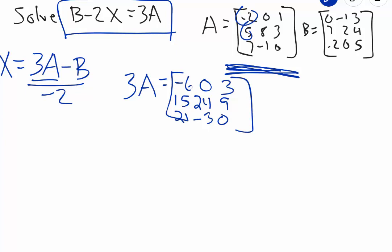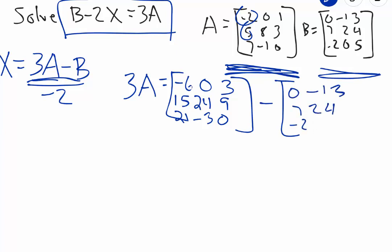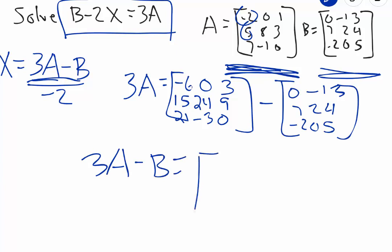After we have 3A, we are going to subtract B from it. So here we have 3A and we're going to subtract B, which is this matrix over here. I'll rewrite it so we have everything on the same line to do the subtraction — that's 3A minus B. We're going to take all corresponding positions and subtract them.